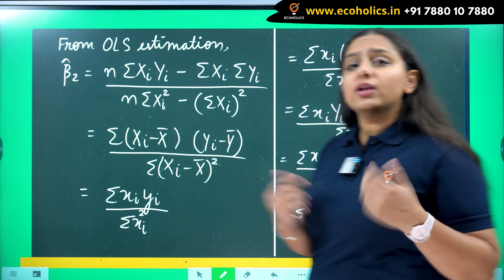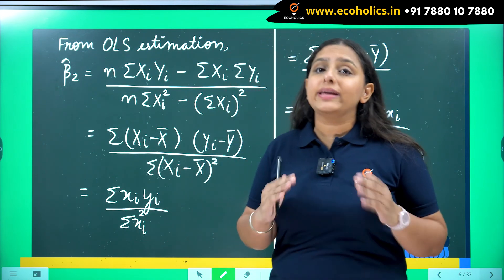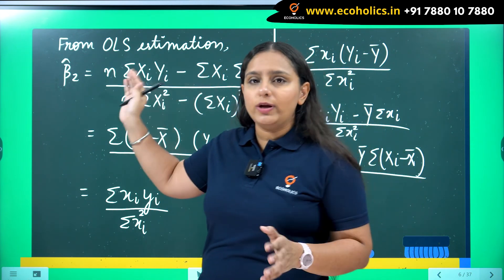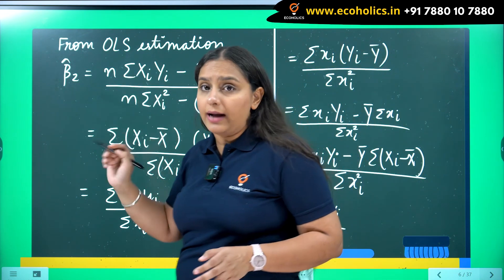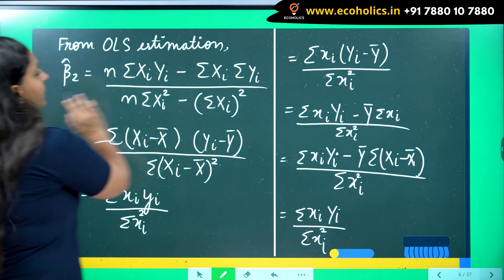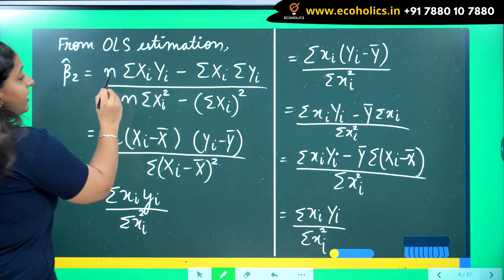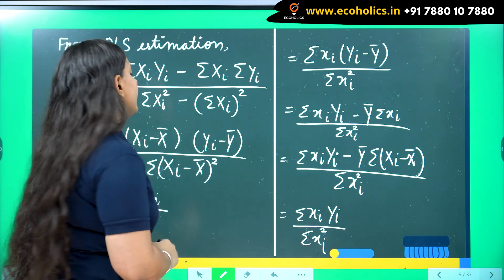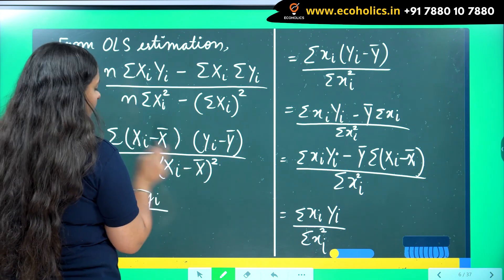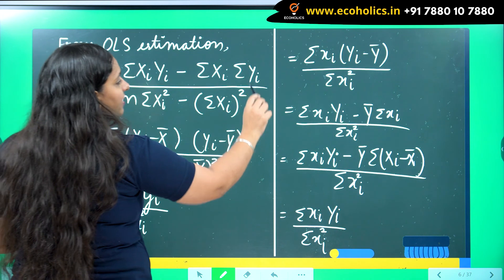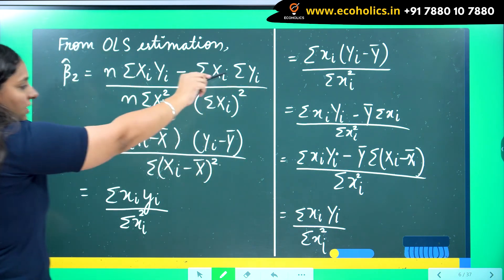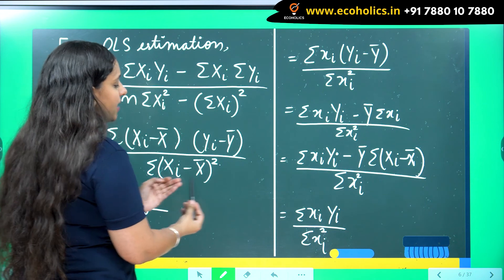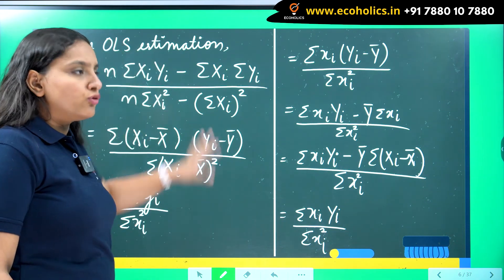In a previous video I showed how to derive the value of OLS estimators — there is a link in the description. Taking β̂₂ from that derivation: if I divide through by n, I get summation of (xi minus x-bar)(yi minus y-bar) in the numerator, because dividing by n converts terms into mean values. The denominator becomes summation of (xi minus x-bar) squared.